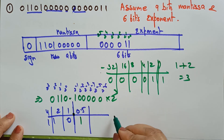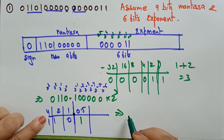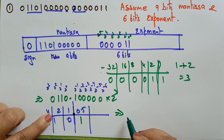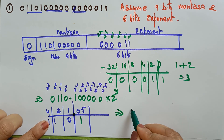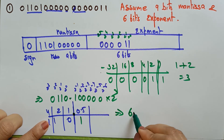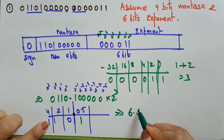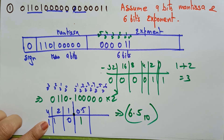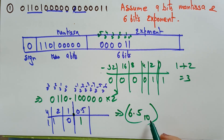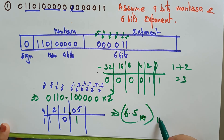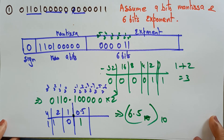So the result is 4 + 2 = 6 for the integer part, plus 0.5 for the fraction, giving 6.5 to the base 10.